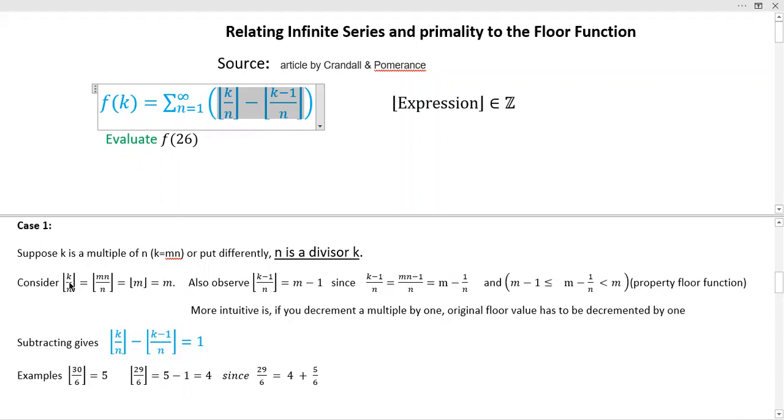So now, if we have the floor of K over N right here, well, K is a multiple of N, so the N's cancel. The floor of M is M, easy pickings. Not much K minus one over N. Well, that's equal to M minus one because if you rewrite this input argument as M N minus one over N, you get M minus one over N. But one over N is going to be less than one. It could be one, but it really doesn't make any difference. It's going to typically be a fraction less than one, and so that's going to pull it down to the next multiple, which would be M minus one.